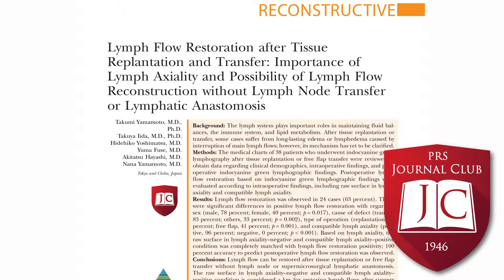The central message of this study is that lymph axiality-based tissue transfer has the potential to restore lymphatic flow to sites where lymphatic channels have been disrupted without the need for vascularized lymph node transfer or lymphaticovenular anastomosis. Using ICG lymphography for both preoperative planning and postoperative evaluation, the authors determined that lymphatic flow was consistently restored when the donor and recipient lymphatic channels were placed into proper alignment and in close proximity to one another. The authors define two terms: raw surface in lymph axiality (RLA), describing the raw surface area between lymphatic vessel stumps, and compatible lymph axiality (CLA), used to describe compatible lymph flow directions of the recipient and donor tissues or a distance shorter than two centimeters between lymphatic stumps.